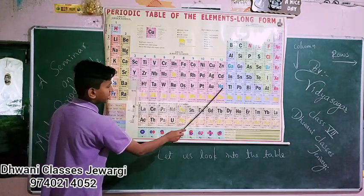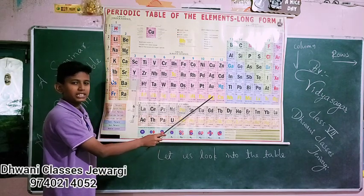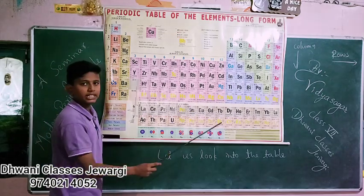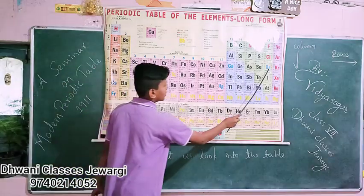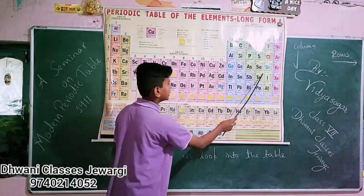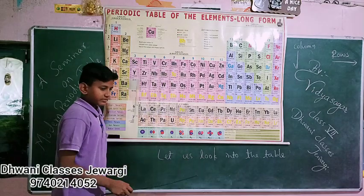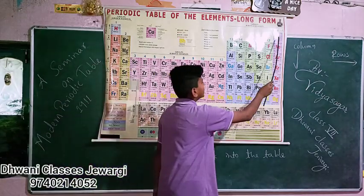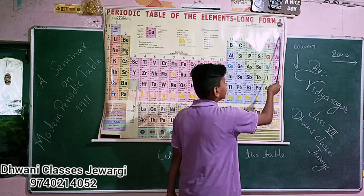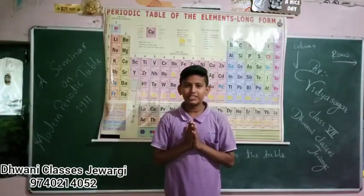Mercury is the metal which is in liquid state at room temperature. Bromine is the non-metal which is in liquid state. The 18th group contains inert gases, which are also called noble gases. Thank you for watching the video.